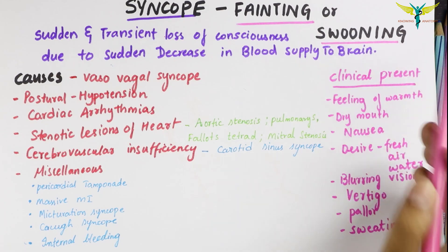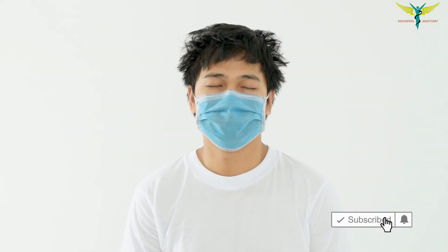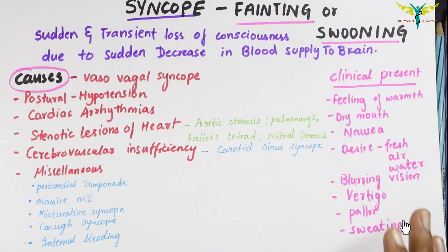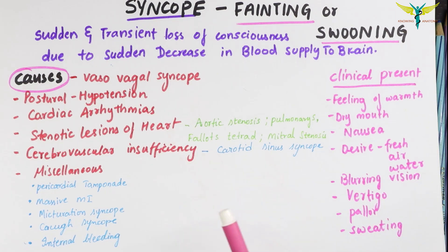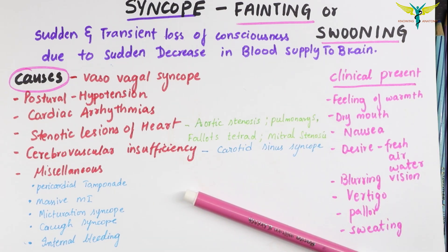Syncope, also called fainting or swooning, is ultimately a sudden and transient loss of consciousness due to a sudden decrease in blood supply to the brain. If you like this video, please subscribe to the channel and check out recent videos and playlists.